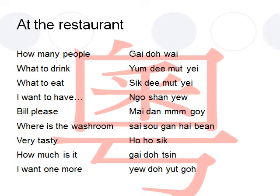If you want to go to the washroom, you want to ask other people where is the washroom. In Cantonese, where is the washroom is 洗手間喺邊. 洗手間 means washroom, and 喺邊 means where is. So where is the washroom in Cantonese, you would say 洗手間喺邊.